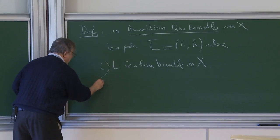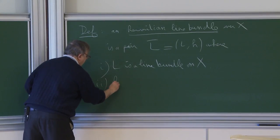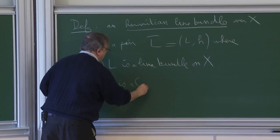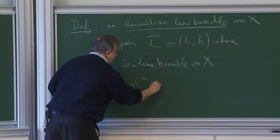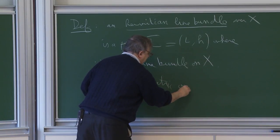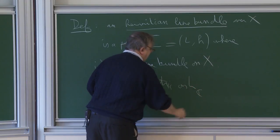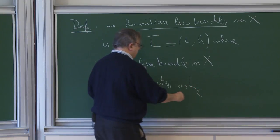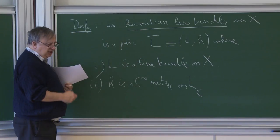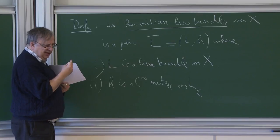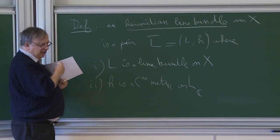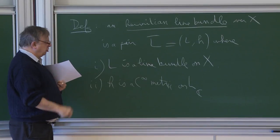And second, H is a smooth metric on the complex line bundle L_C induced by L on X_C. So it's a metric: for each point we have a notion of norm, and this norm varies smoothly in local coordinates.